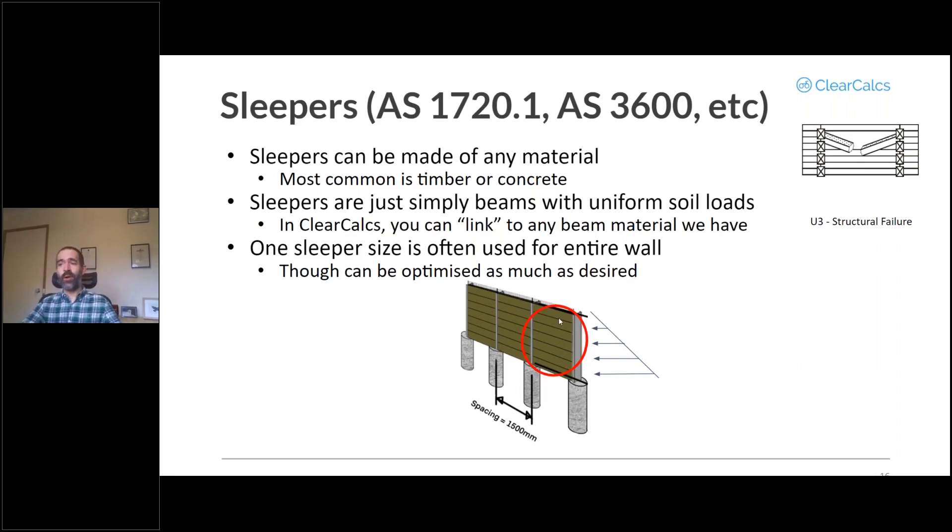So technically, that bottom sleeper needs to be considerably stronger than the top sleeper. You can optimize that if you want. You can have as many different sizes or strengths as you'd like. It's up to you to decide what is most economically efficient. You can optimize that or not optimize that as much as you would like.